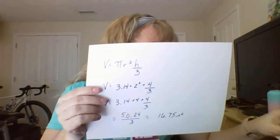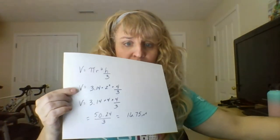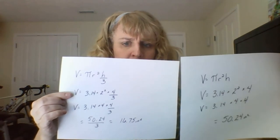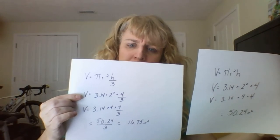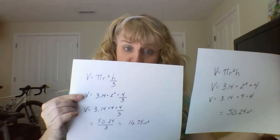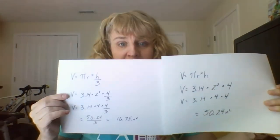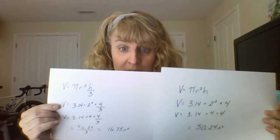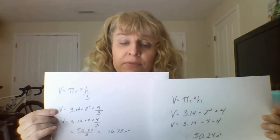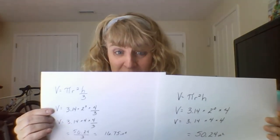That gives us the volume of our cone — significantly less than the volume of the cylinder. Notice that 50.24 is what we divided by 3. That's the key relationship between the two formulas — the only difference is the cone formula is divided by 3.